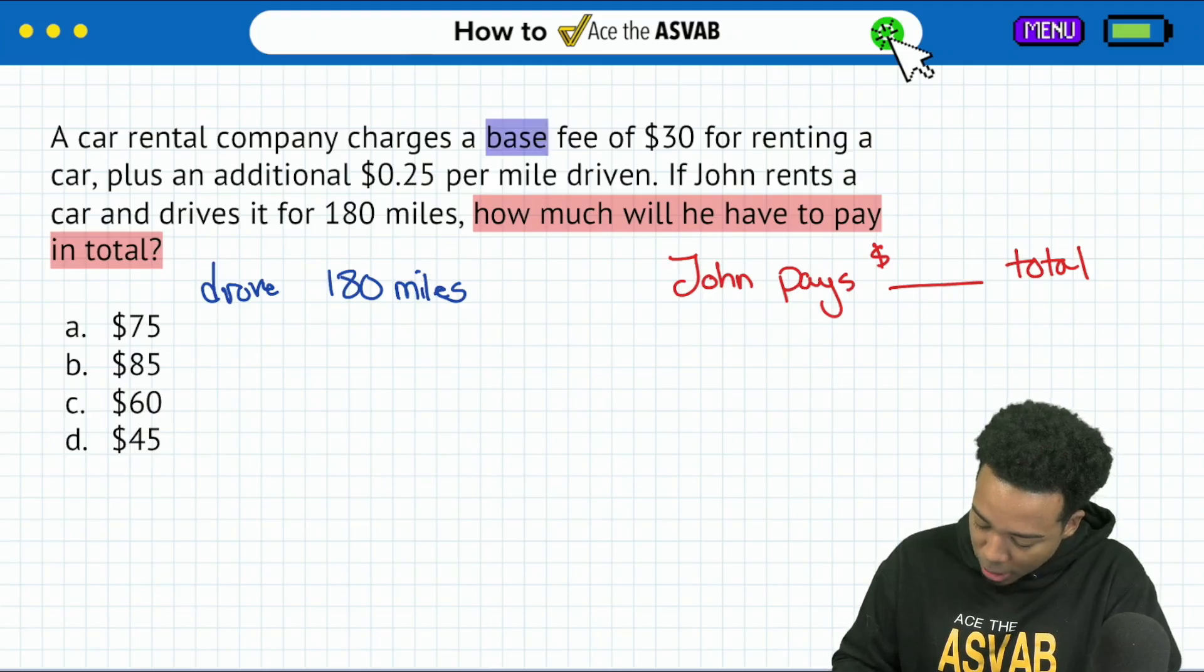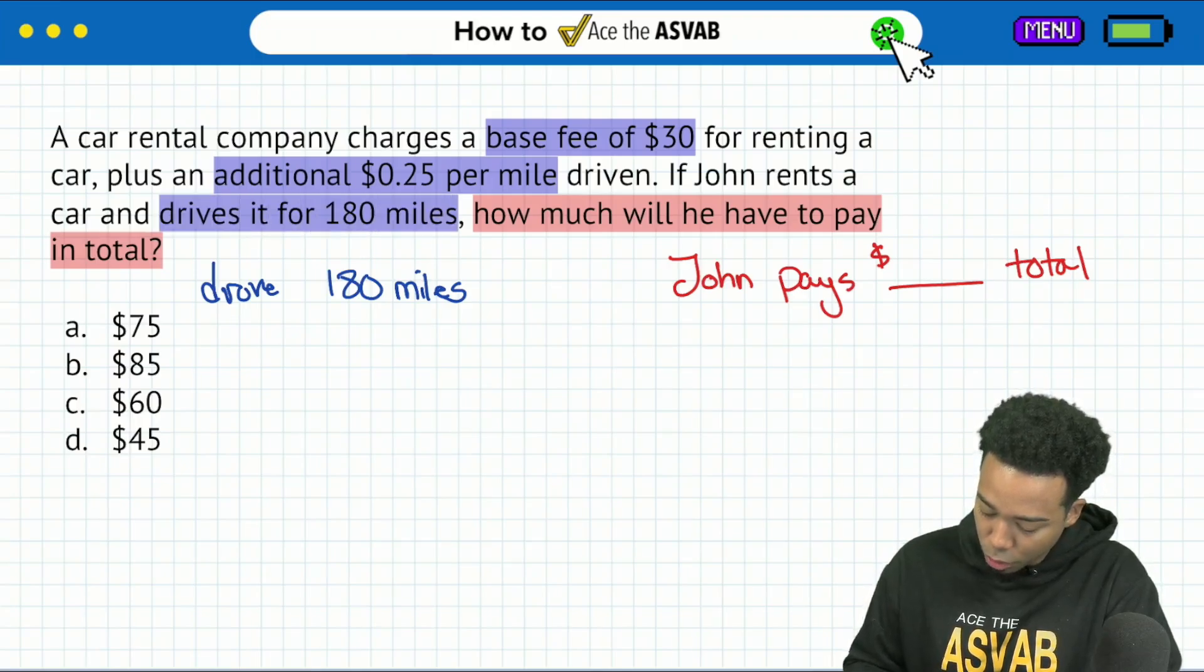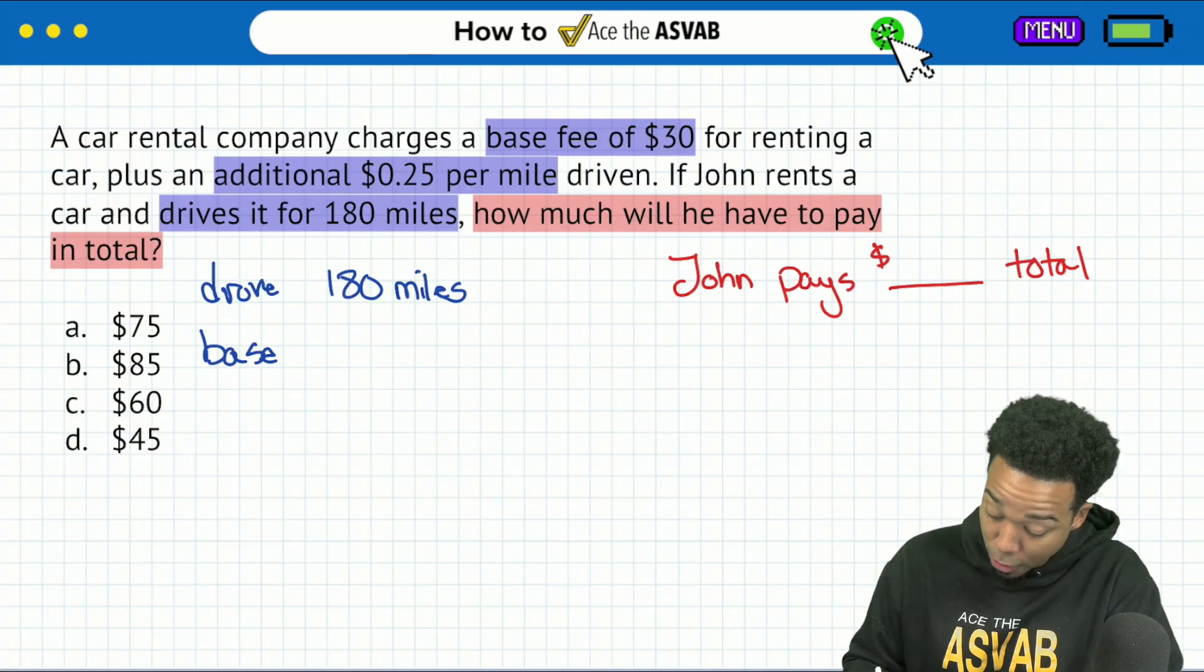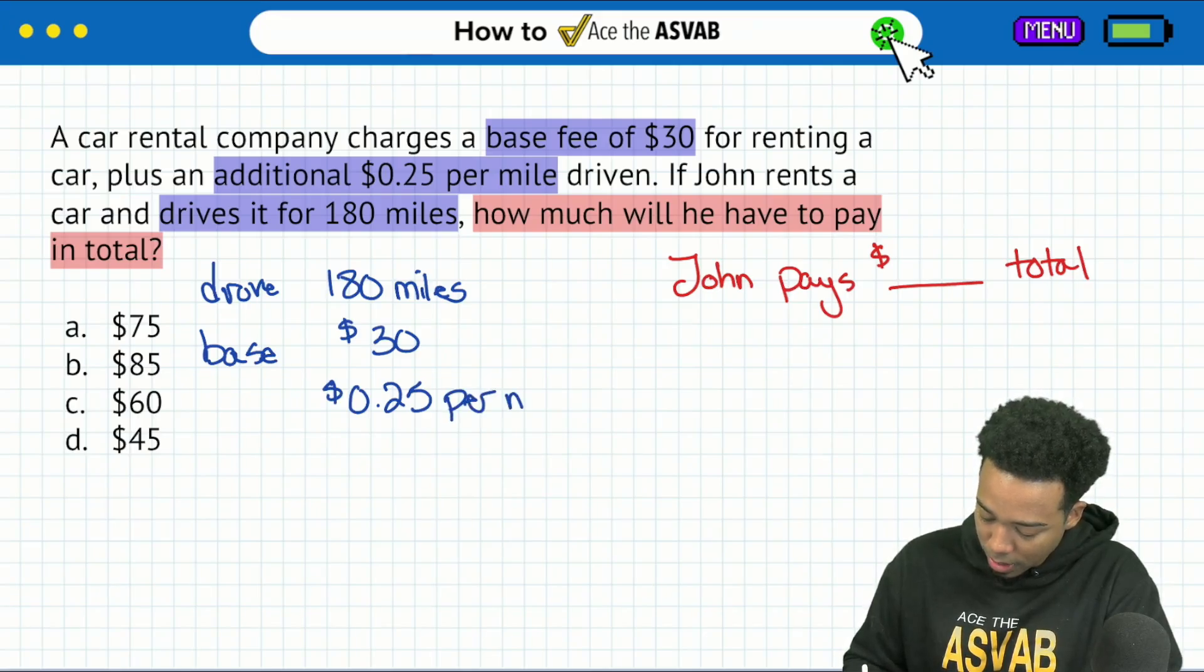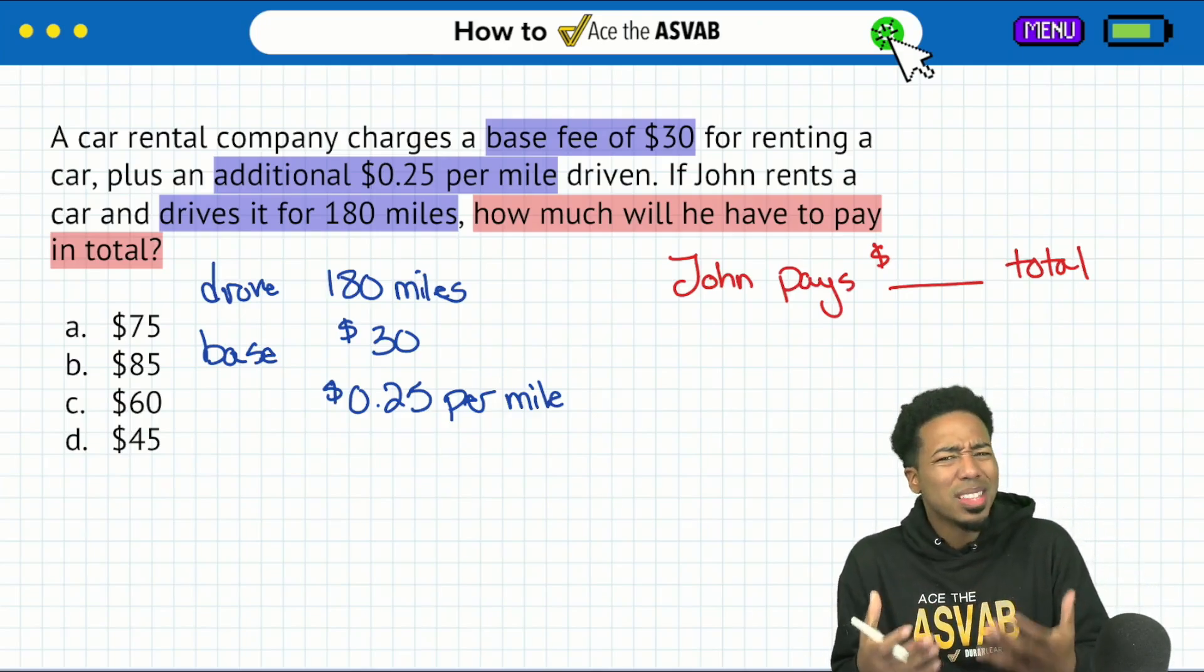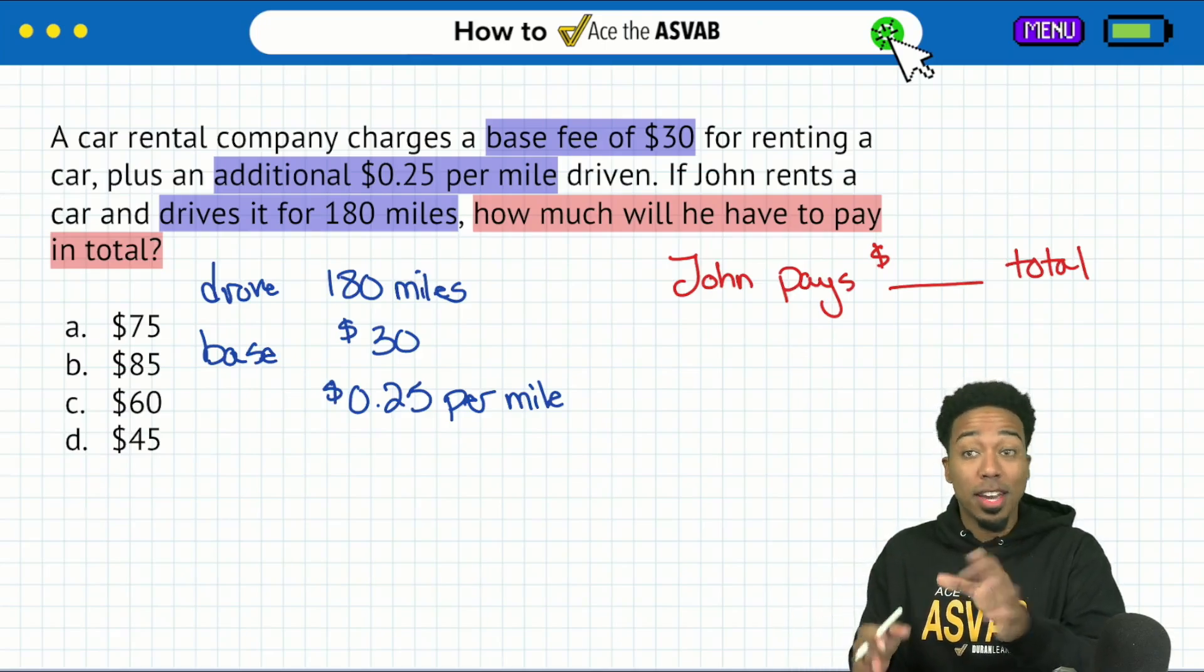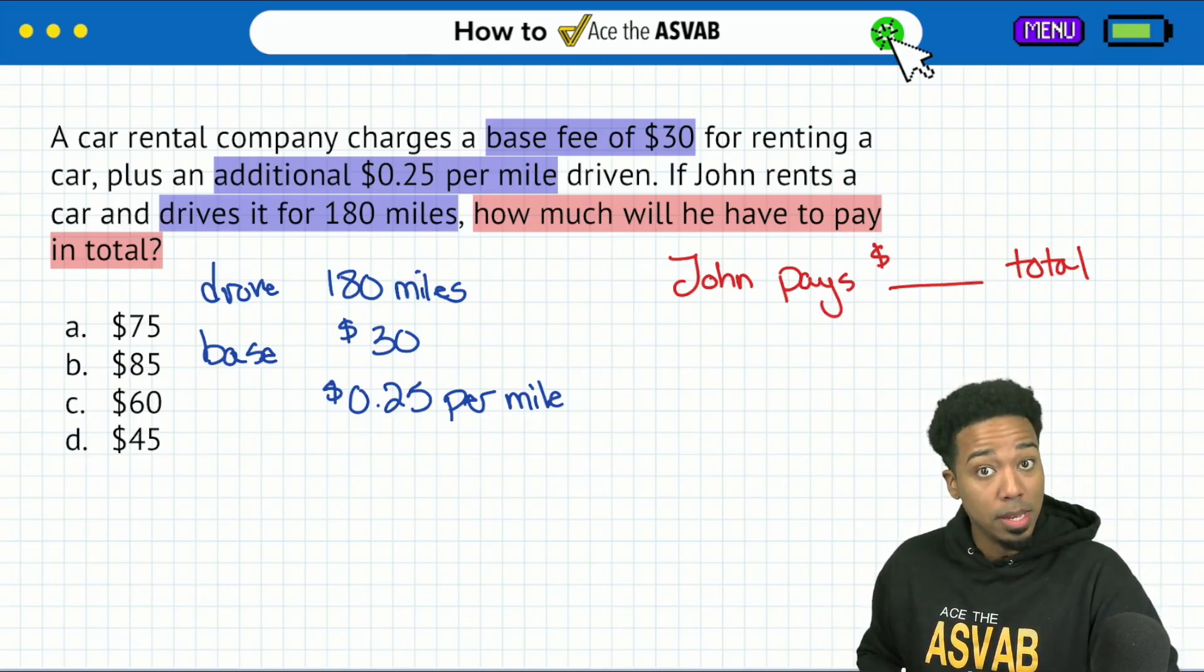We're not going to pretend that we didn't see that. So we're going to say drove for 180 miles. I'll just write that down right there. Then up next, what do we have? We see that it says a car rental company charges a base fee. What does a base fee mean? That's the beginning amount. So charges a base fee of $30 for renting a car plus an additional 25 cents per mile driven. And then again, rent it for 180 miles. So let's write that out here again. So in blue, we have a base fee of 30, an additional 25 cents per mile, and then drove for 180 miles.